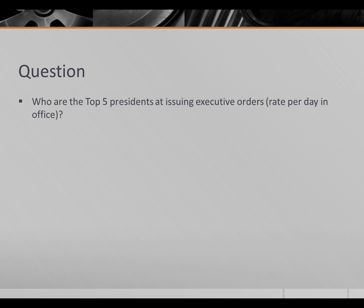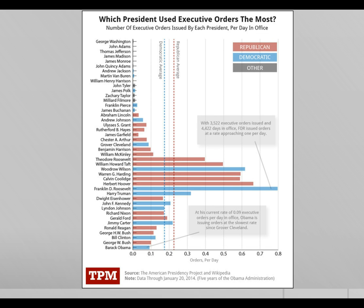Who are the top five presidents at issuing executive orders, measured in number per day in office? The heyday of executive orders was from the 1910s through the early 1950s — roughly from Theodore Roosevelt to Harry Truman — when presidents did a lot of executive ordering. Since then, the rate has been fairly restrained.